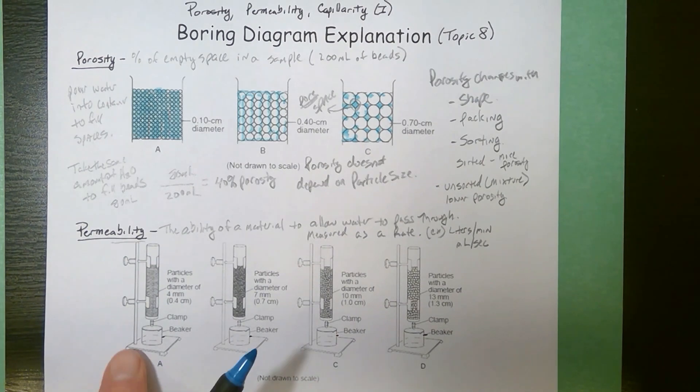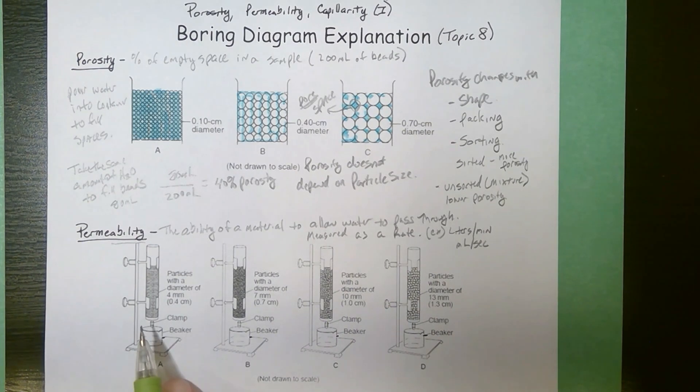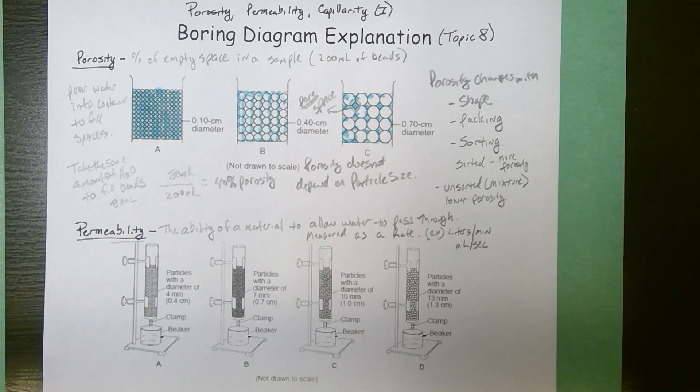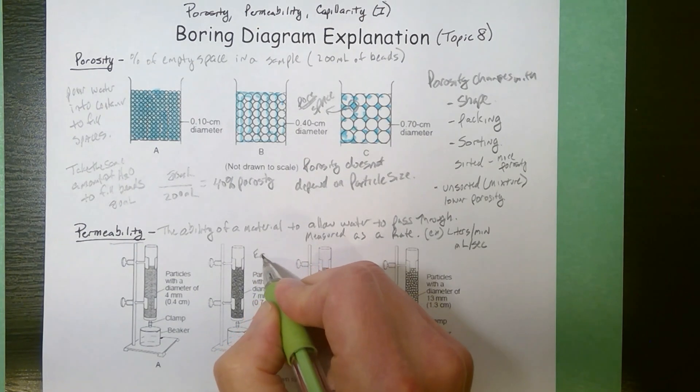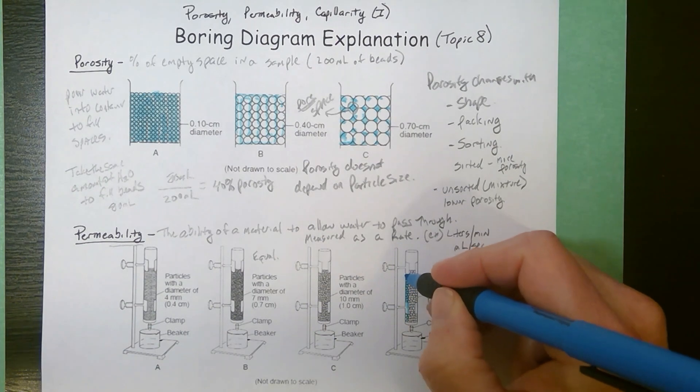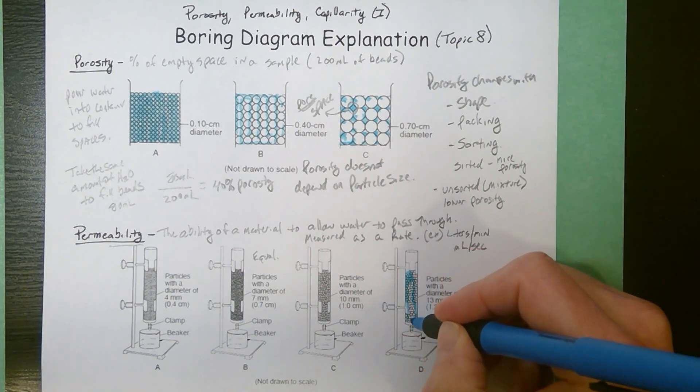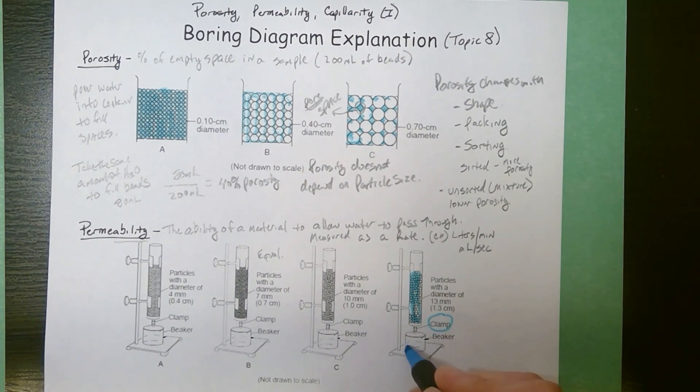So when we do an experiment with permeability, we're going to take an equal volume. There's the same amount of 0.4, 0.7, 1.0, and 1.3 centimeter particles. So we're going to take equal volume particles. We're going to fill it all the way up to the top with water. We're going to completely saturate it. You'll notice there's a clamp on the bottom. We undo the clamp and we time how long it takes for the water to drain out of the substance.